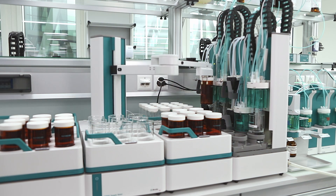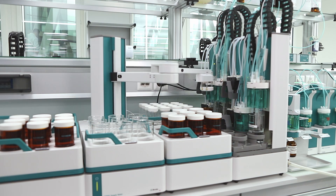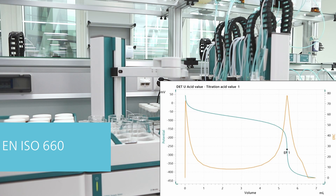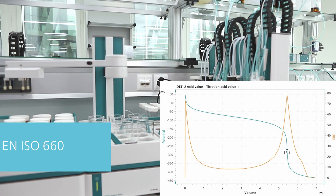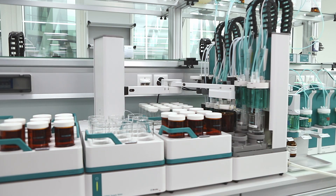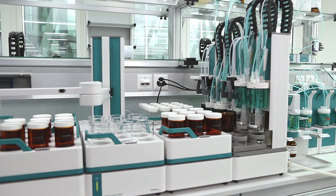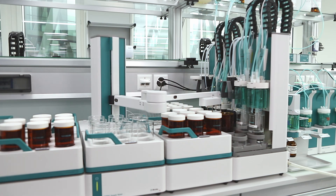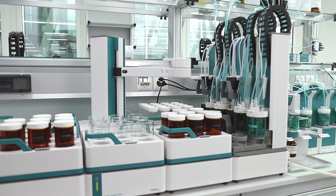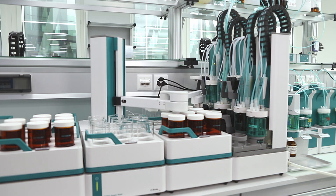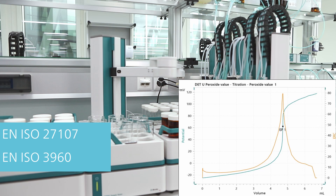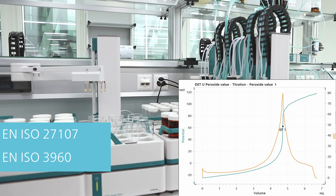The acid value is a parameter used for the characterization of fats and oils. The higher its value, the lower the quality of oil. The peroxide value is an indicator of age and quality of the edible oil. The lower the value, the fresher the oil is.